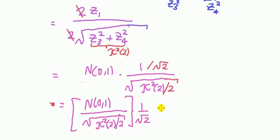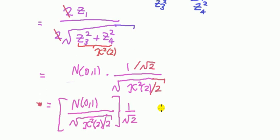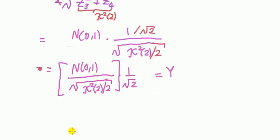So that is my Y. Let's make it clear here. And this is t, it's t with degree of freedom 2.